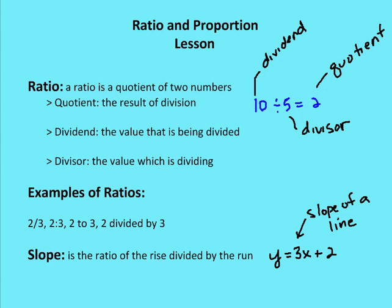A ratio is a quotient of two numbers. Let's review the terms from division: the dividend is the value being divided, the divisor is the value being divided into the dividend, and the quotient is the result of the division. For example, in 10 divided by 5 equals 2, the dividend is 10, the divisor is 5, and the quotient is 2. So a ratio is a quotient of two numbers — a relationship between two numbers that are being divided.